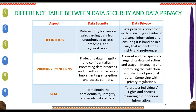The next aspect is Primary Concerns. Primary concerns of data security are: protecting data integrity and confidentiality, preventing data breaches and unauthorized access, and implementing encryption and access controls. Similarly, primary concerns of data privacy are: consent and transparency regarding data collection and usage, managing and controlling the collection and sharing of personal data, and complying with privacy regulations. The next aspect is Goal: the goal of data security is to maintain the confidentiality, integrity, and availability of data, while the goal of data privacy is to protect individuals' rights and choices regarding their personal information.